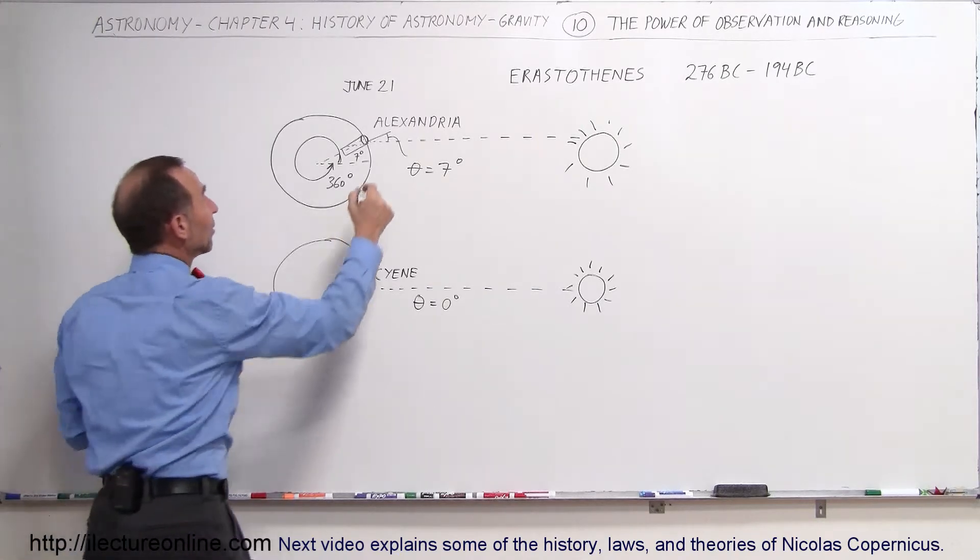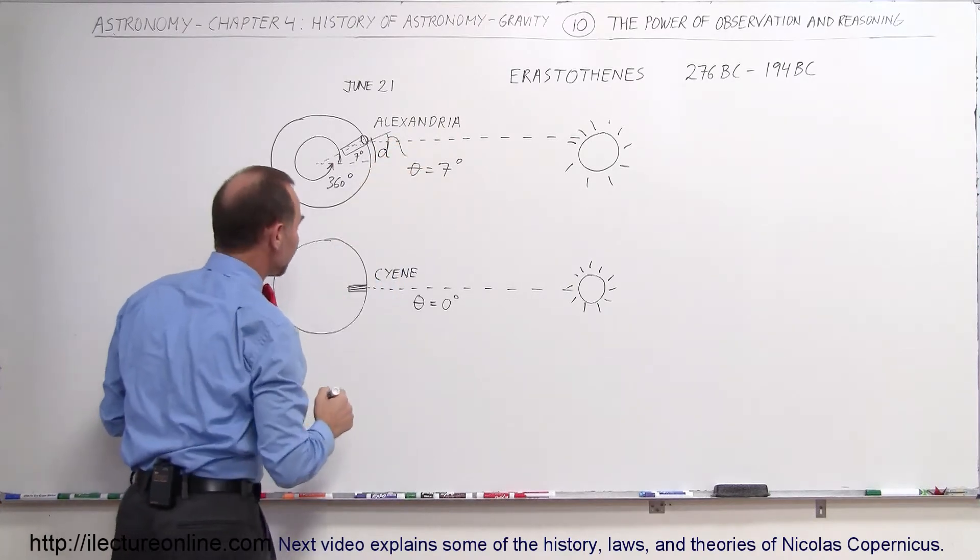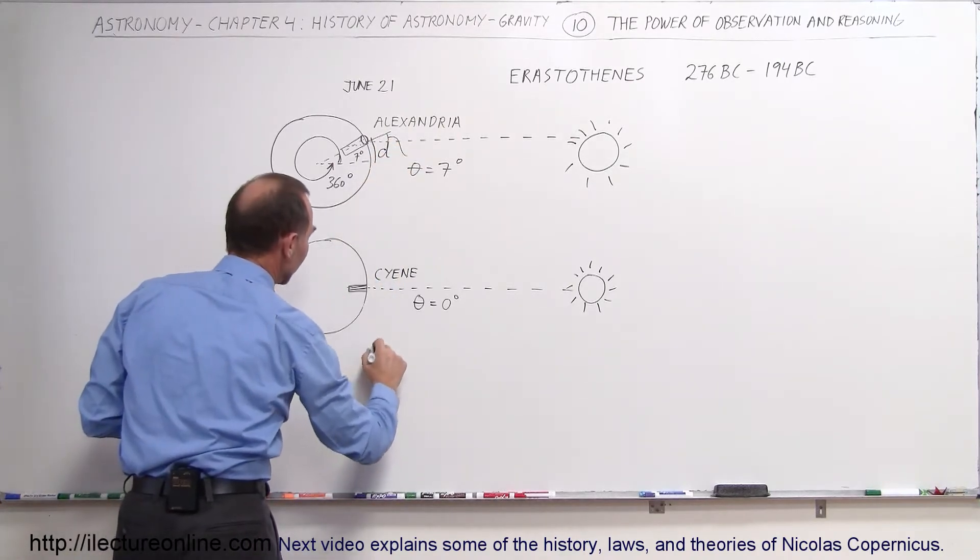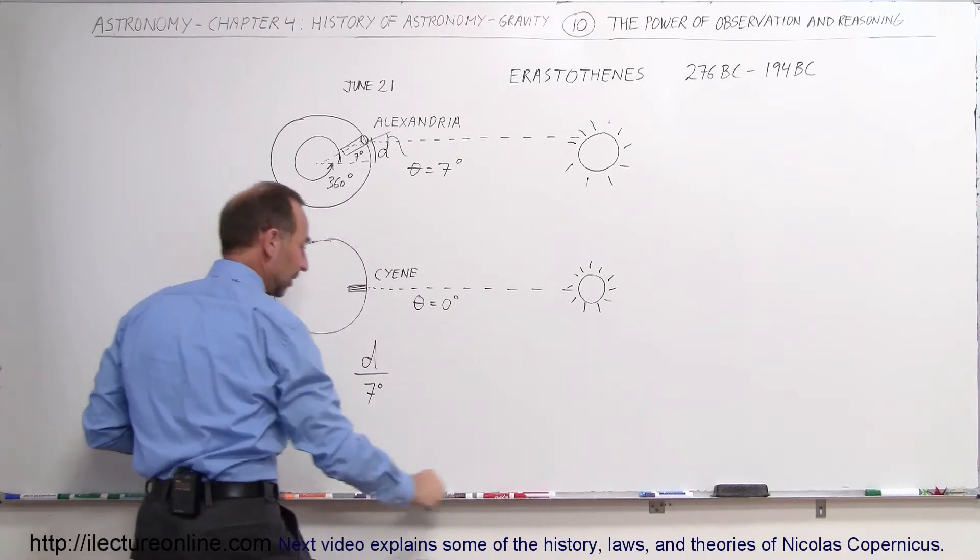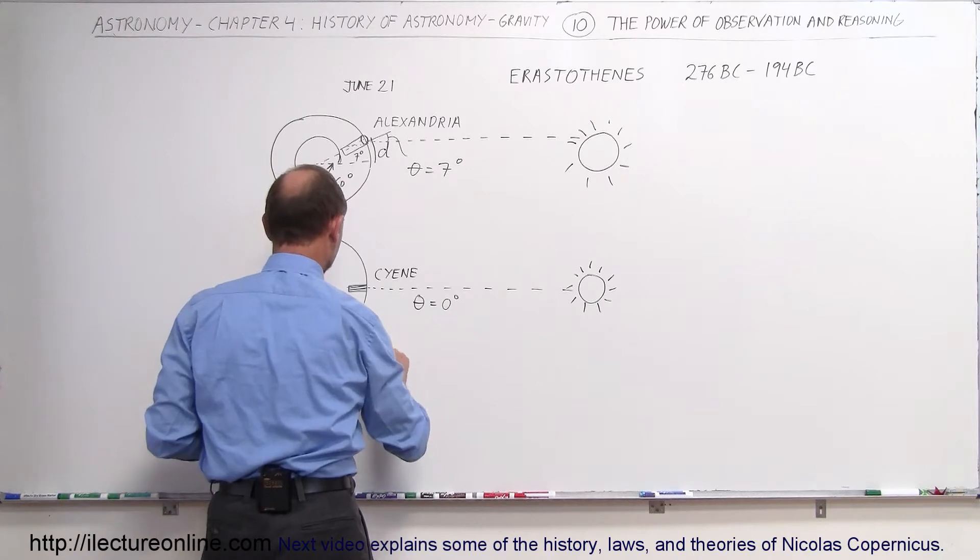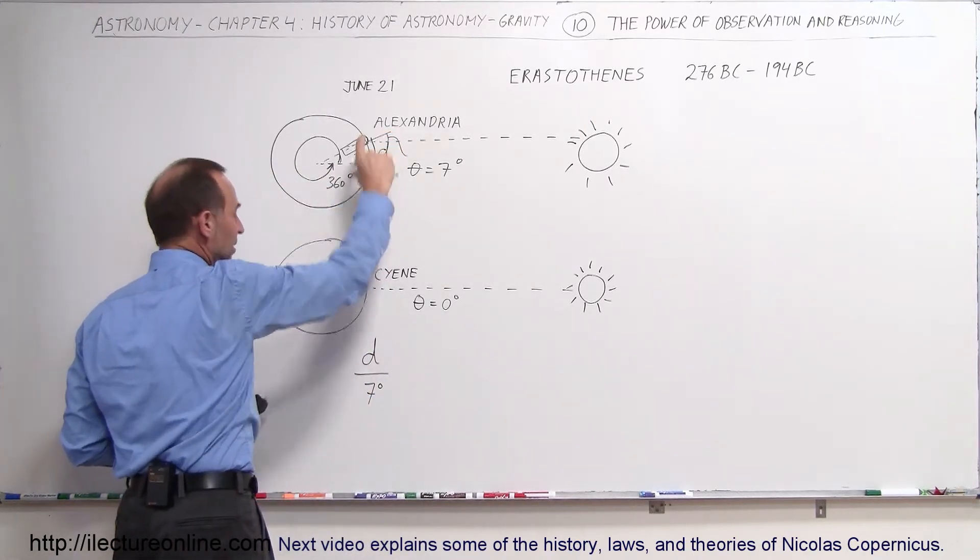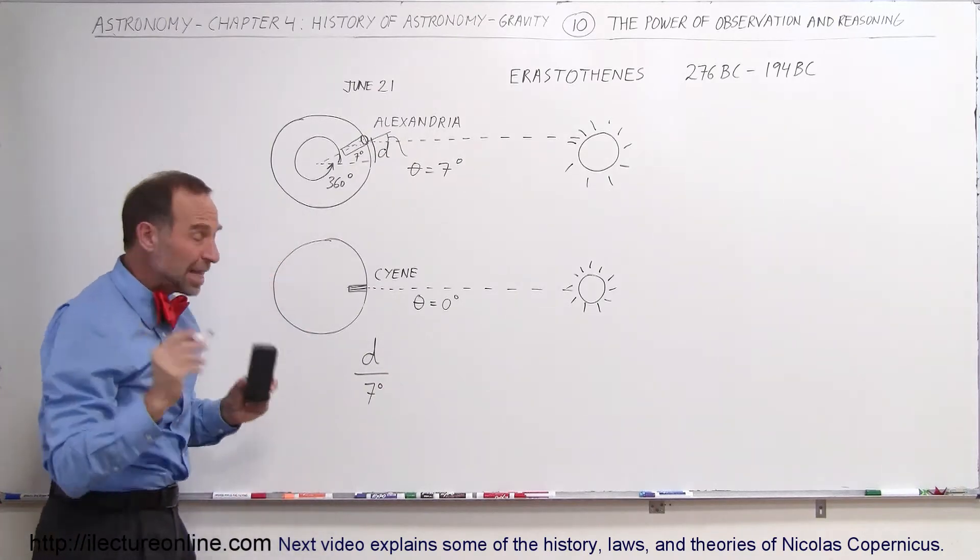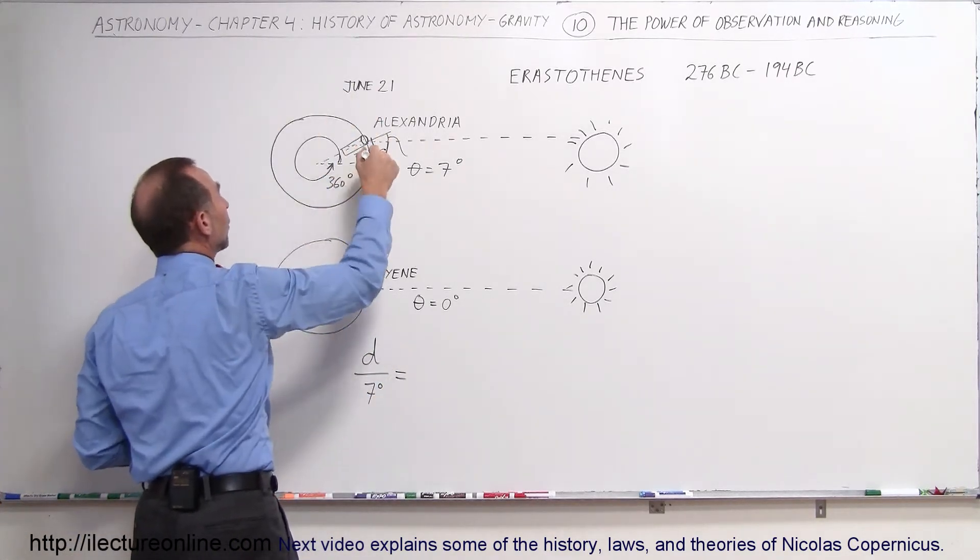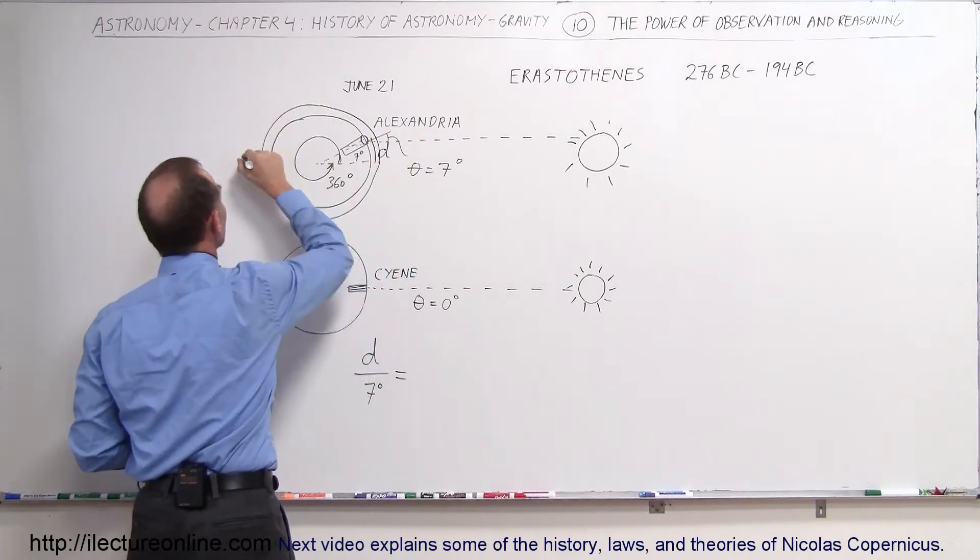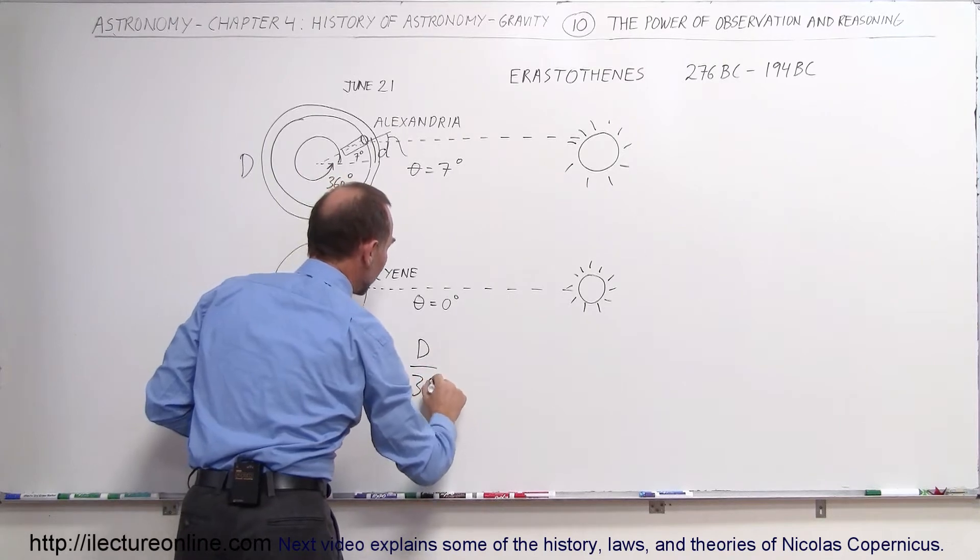He said that the distance between Alexandria and Syene, let's call that a small d, so you can then say that the distance between the two cities divided by the angle of seven degrees should be equal or proportional to the distance all the way around the Earth. So let's call the distance all the way around the Earth big D divided by 360 degrees.